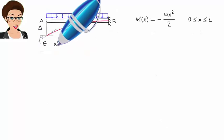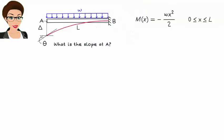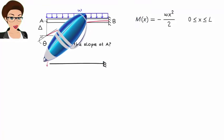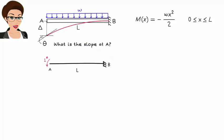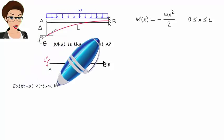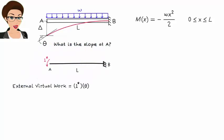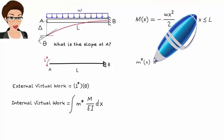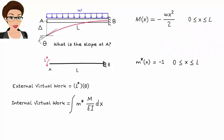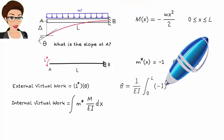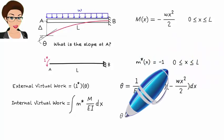Suppose we are also asked to determine the slope of the elastic curve at A. This can be done easily using the method of virtual work. Here, since we are looking for slope, denoted by theta, we are going to place a virtual unit moment at A. This way, the product of the rotation and virtual moment is virtual work. So, the expression for external virtual work becomes M star times theta. The expression for internal virtual work remains the integral of M star times M over EI dx. However, now M star is the moment equation due to a unit virtual concentrated moment applied at A. So, the cantilever's rotation at A is the computed result.